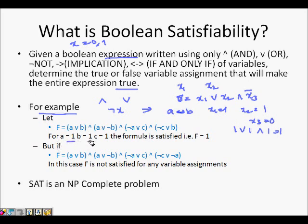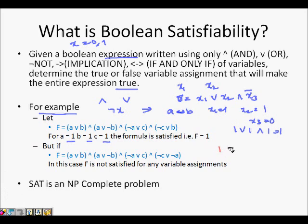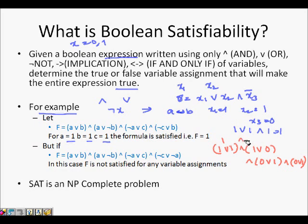If we take a=1, b=1, and c=1, the formula is satisfied. Let's check: 1 OR 1 gives 1, AND with (1 OR 0) gives 1, AND with (0 OR 1) gives 1, AND with 1 gives 1. So 1 OR 1 is 1, AND with 1 (since 1 OR 0 is 1), AND with 1 — this becomes equal to 1.